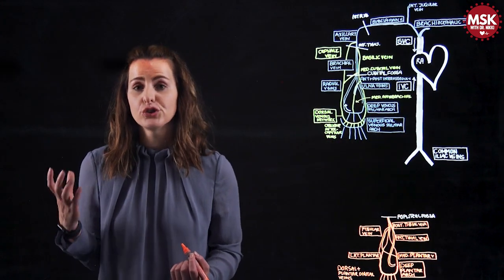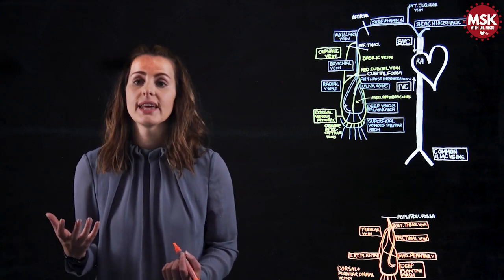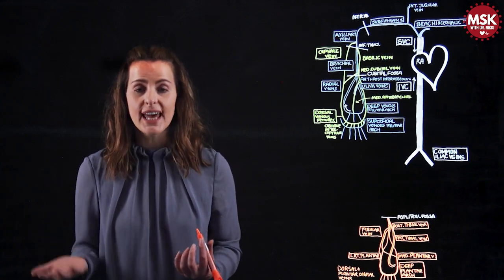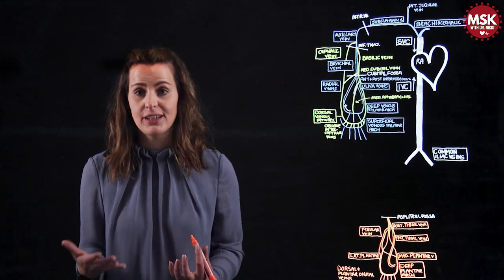Roughly between five to seven centimeters within the popliteal fossa, we then see that confluence of the anterior and the posterior tibial veins to form the popliteal vein.